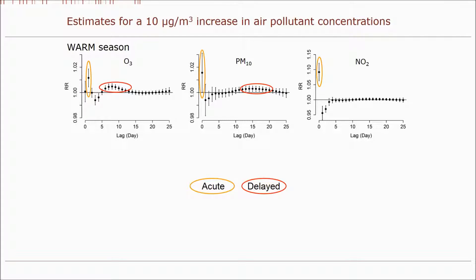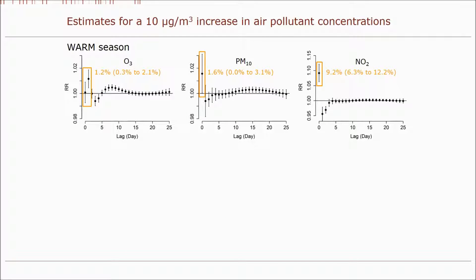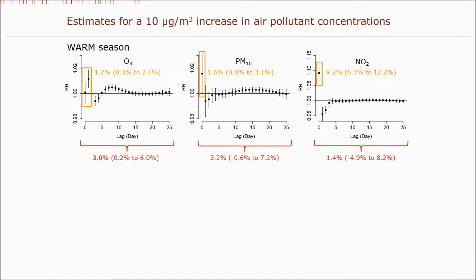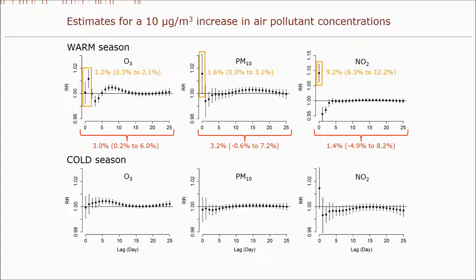During the warm season, we observed acute as well as delayed increases in mortality associated with air pollution. We also found some evidence for short-term mortality displacement, often referred to as harvesting. The estimate for two-day ozone was 1.2%, and the estimates for same-day PM10 and NO2 were 1.6% and 9.2% respectively. When we look at the cumulative estimates over 25 days, which take into account harvesting and delay defects, these estimates were considerably larger than the acute effects for ozone and PM10, but not for NO2. In the cold season, however, we only observed increased mortality risks associated with same-day exposure to NO2 and with 26-day exposure to ozone.